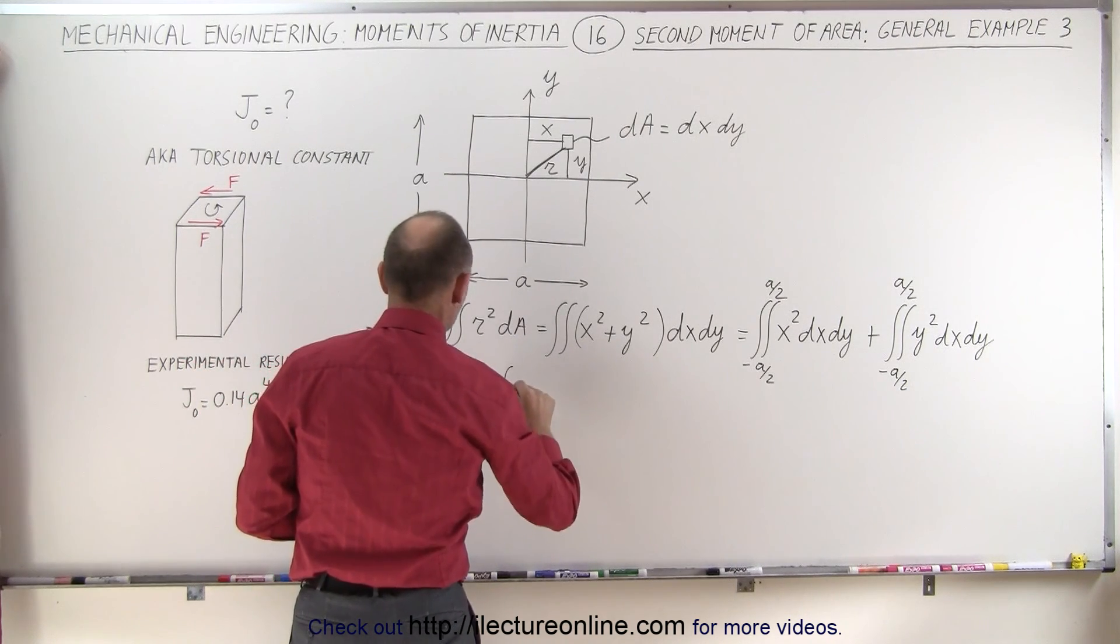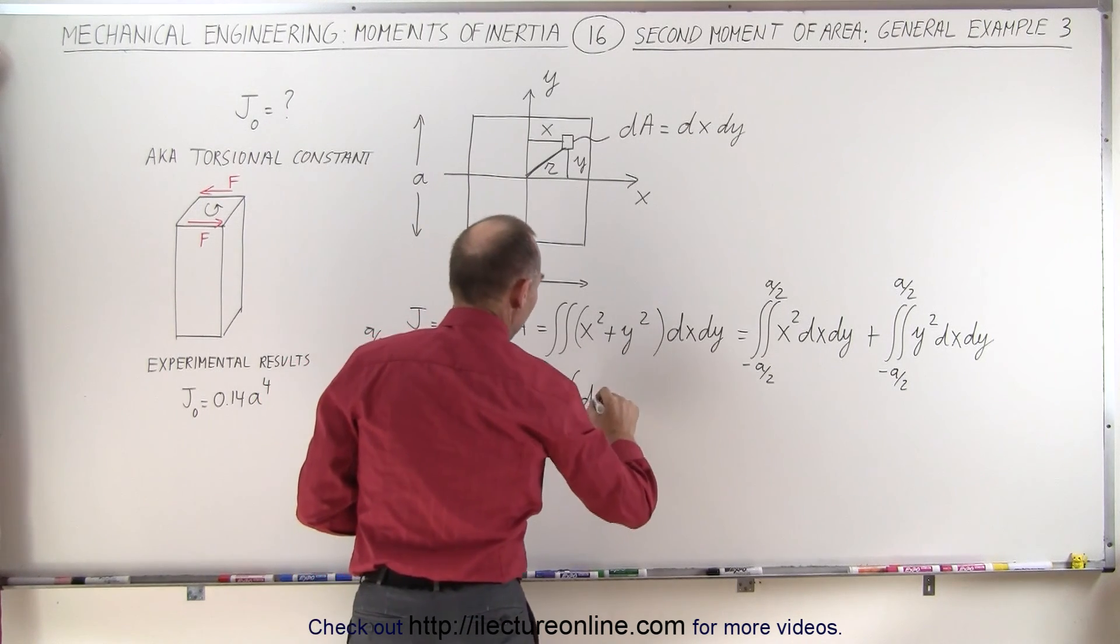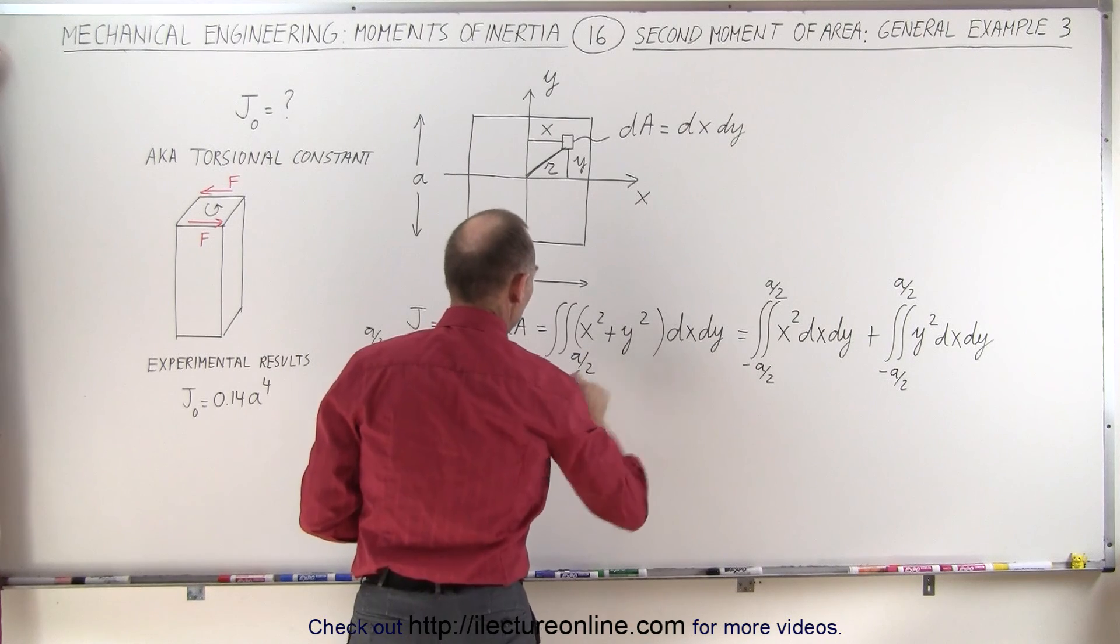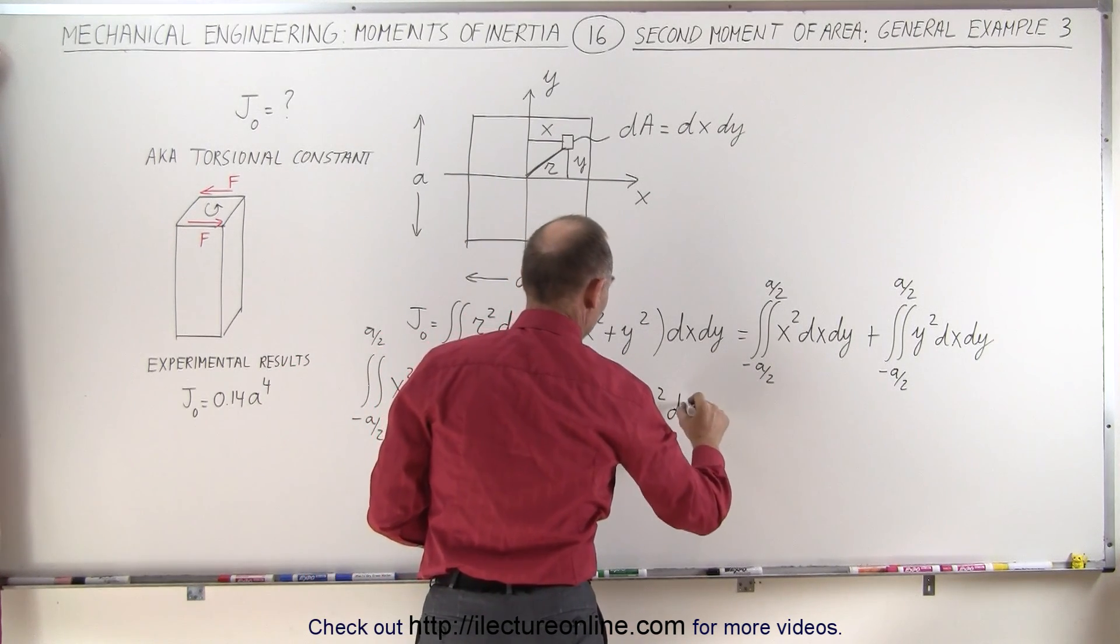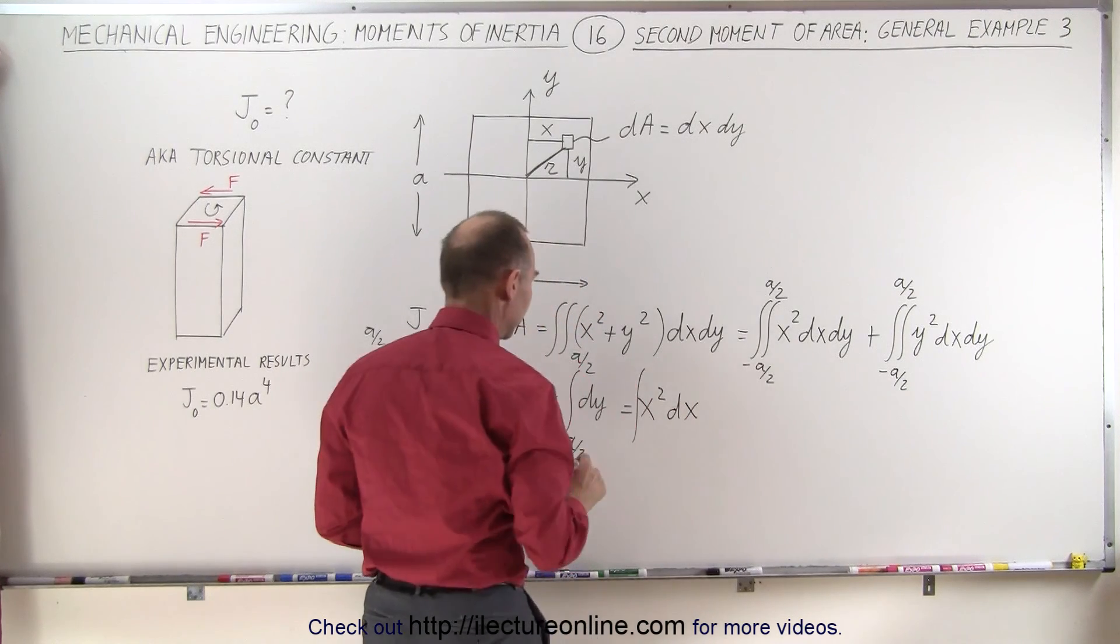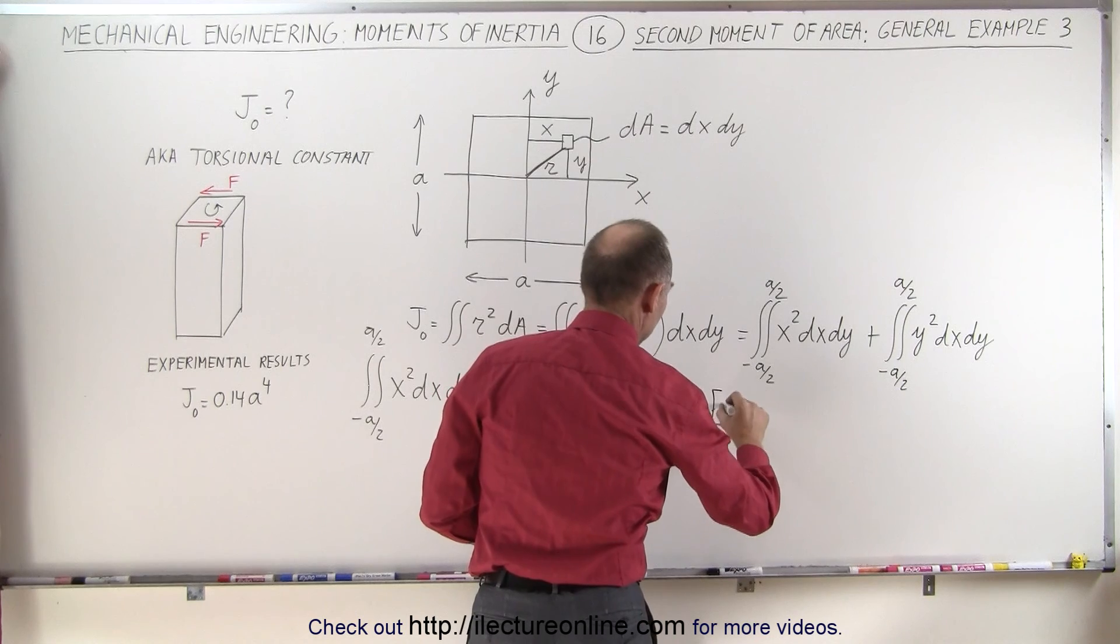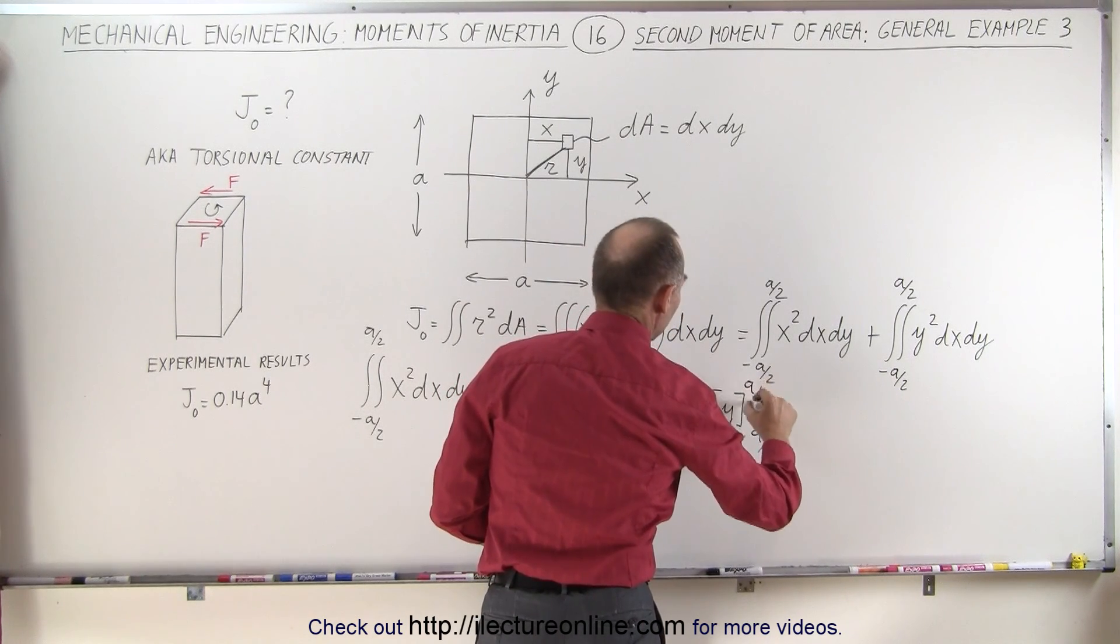We'll first do the dy. This is equal to the integral of x squared dx times the integral of dy from minus a over 2 to positive a over 2, which is equal to x squared dx times y evaluated from minus a over 2 to positive a over 2.